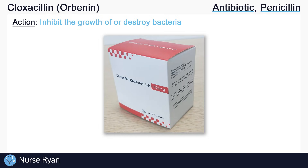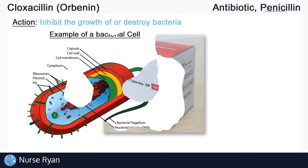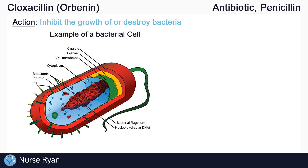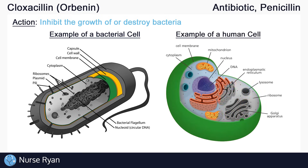Before we get into how penicillins work, let's very quickly review two different types of cells. Bacteria are single-celled or unicellular organisms that can cause disease, and often look something like this. As you can see, bacteria have cell walls and cell membranes. This makes them different from human cells, which only have cell membranes but lack cell walls.